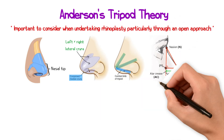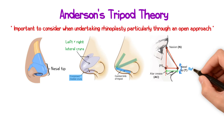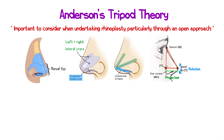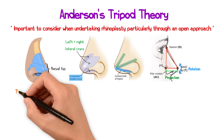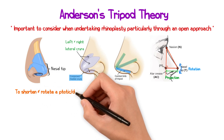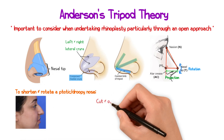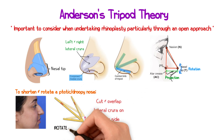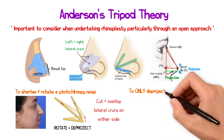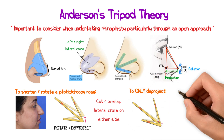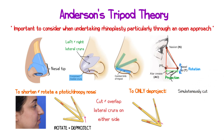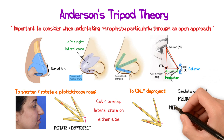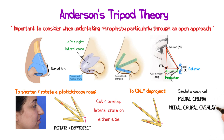As one side is lengthened or shortened, it will have an effect on rotation and projection of the nose. For example, to shorten and rotate a ptotic or droopy nose, one can cut and overlap the lateral crura on either side, thereby rotating and deprojecting the nose. However, if you want to simply deproject the nose without any rotation, you would also need to cut the medial crura — called a medial crural overlay — as all limbs of the tripod would then be shortened equally.